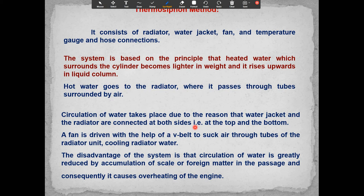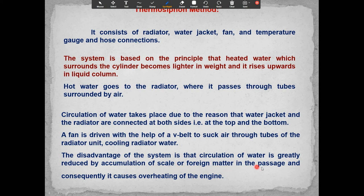The thermosyphon method consists of a radiator, water jacket, fan, temperature gauges, and hose connections. This system is based on the principle that heated water surrounding the cylinder becomes lighter and rises upward. Hot water then goes to the radiator, passing through tubes surrounded by air. Circulation occurs because the water jacket and radiator are connected at both the top and bottom. A fan driven by a V-belt sucks air through the radiator tubes to cool the water. The disadvantage is that scale or foreign matter accumulates in the passages, greatly reducing water circulation and causing engine overheating.